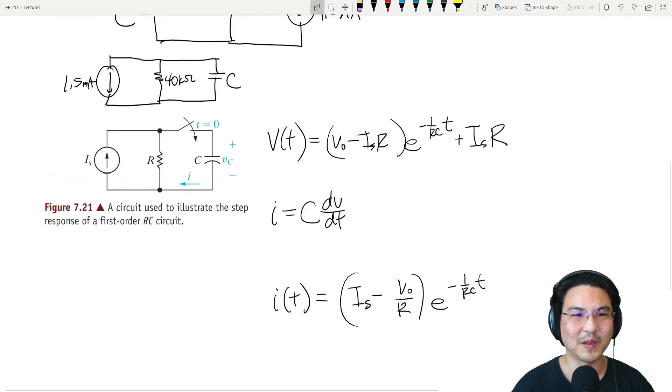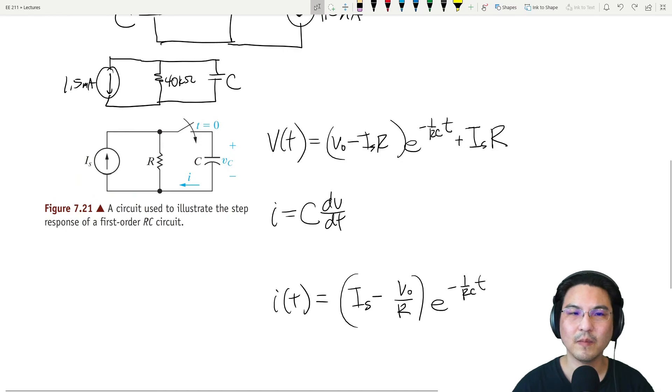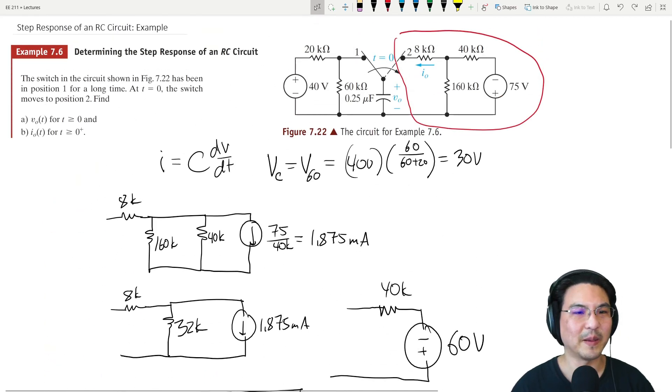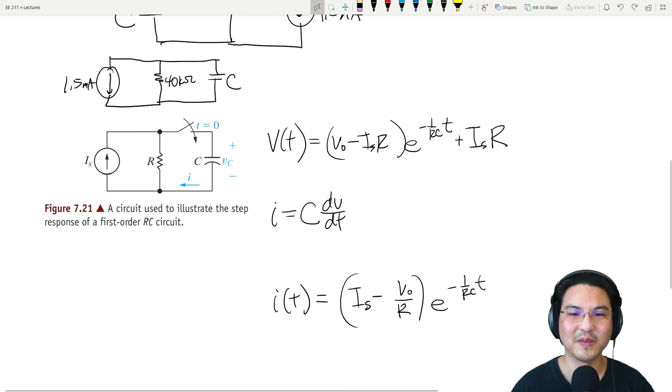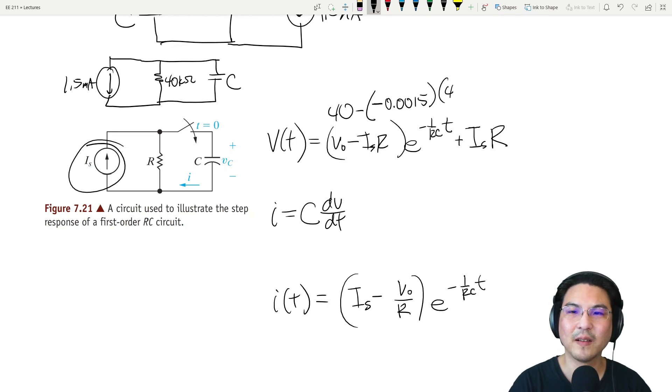So you just plug in the numbers. The values used - this was 40 volts, and the current - be careful, take a look at this - it will be negative 1.5 milliamps. And then R was 40k, so that's V minus IR.